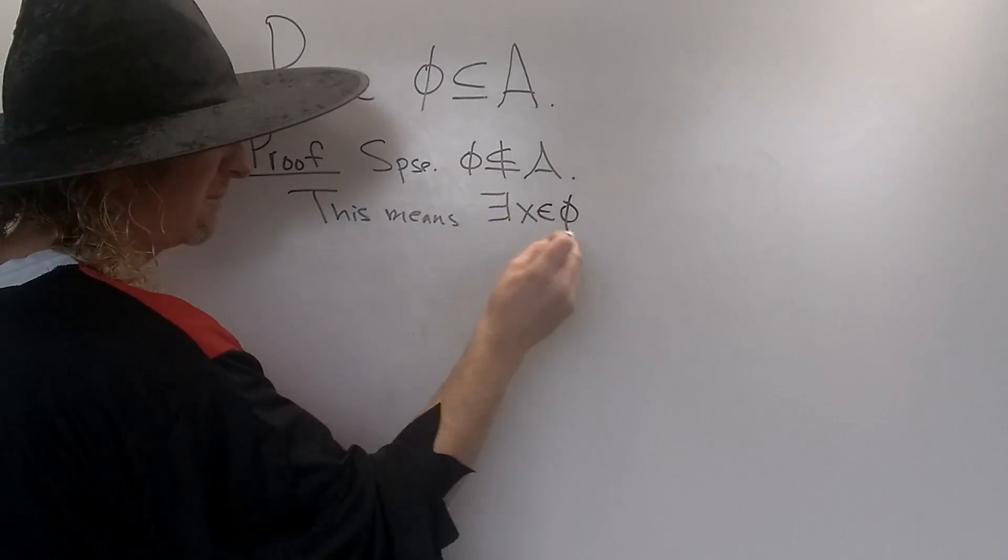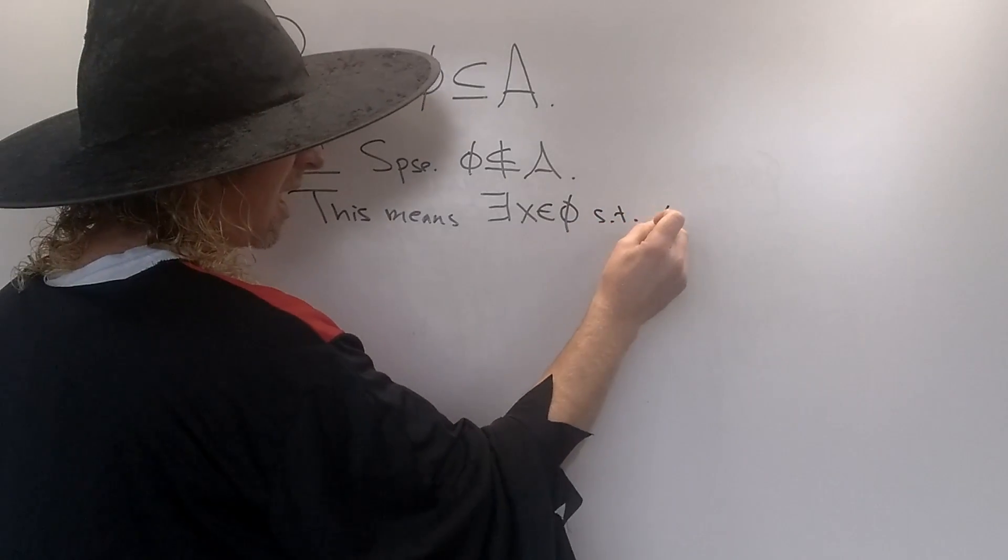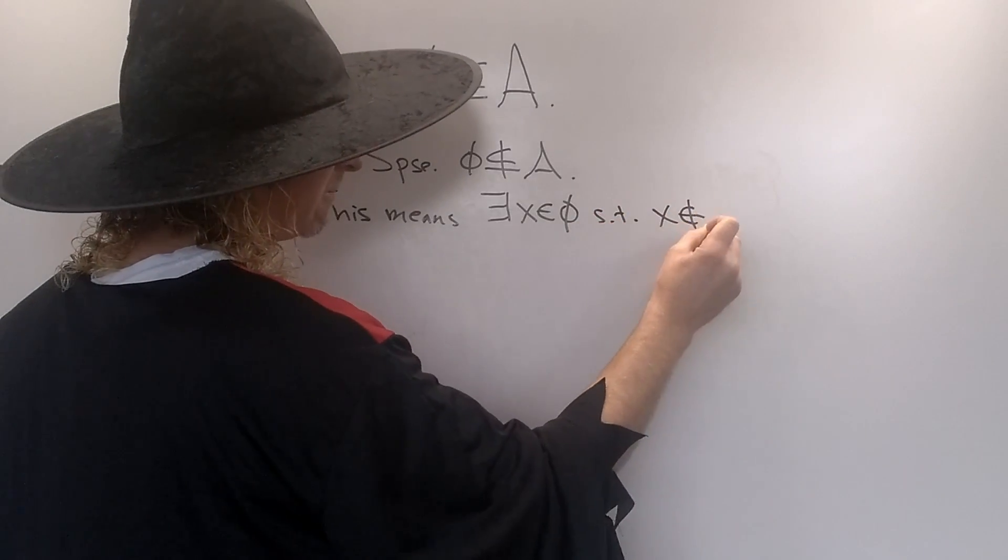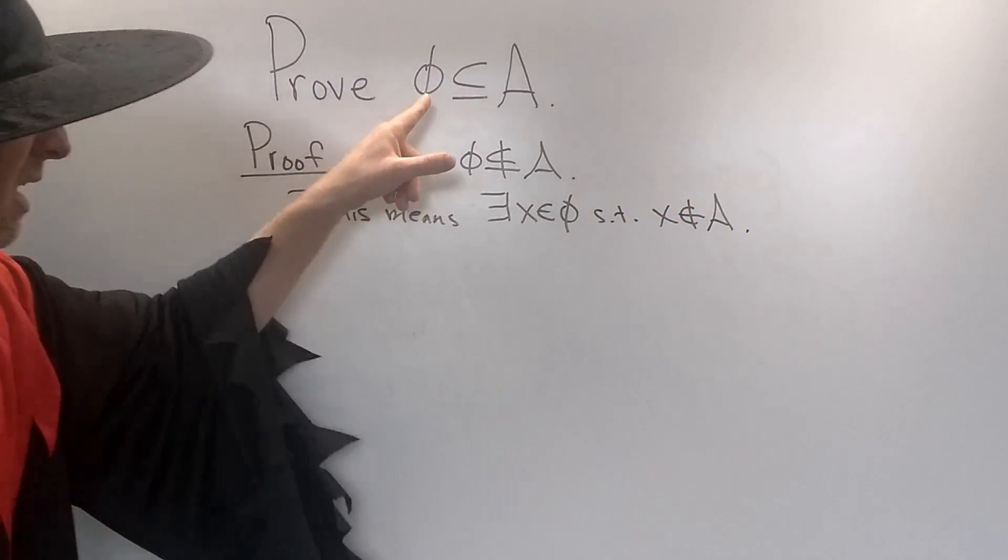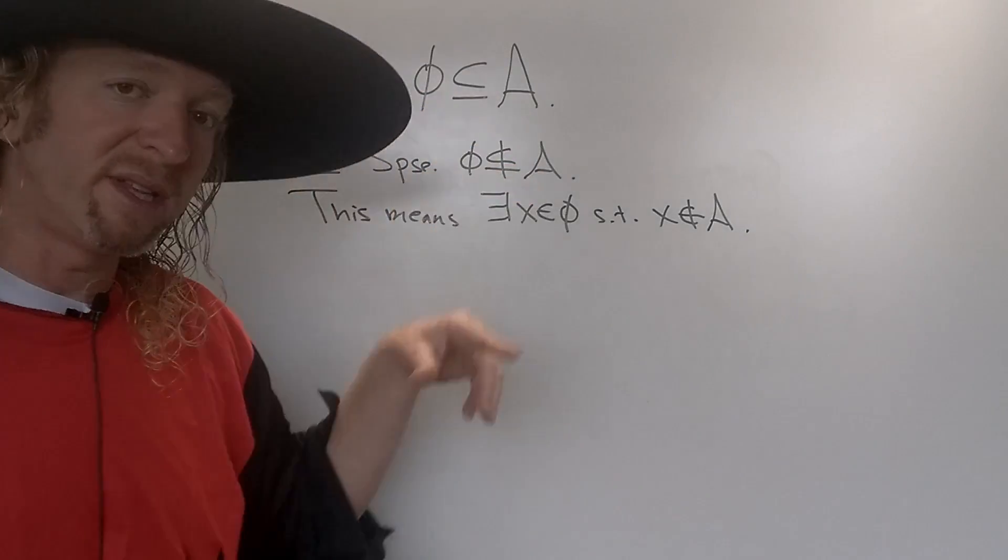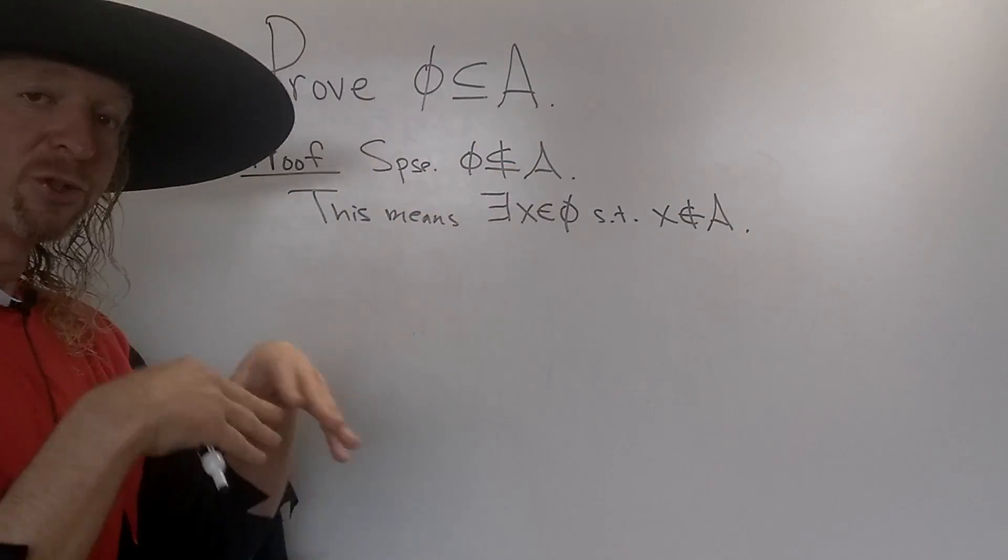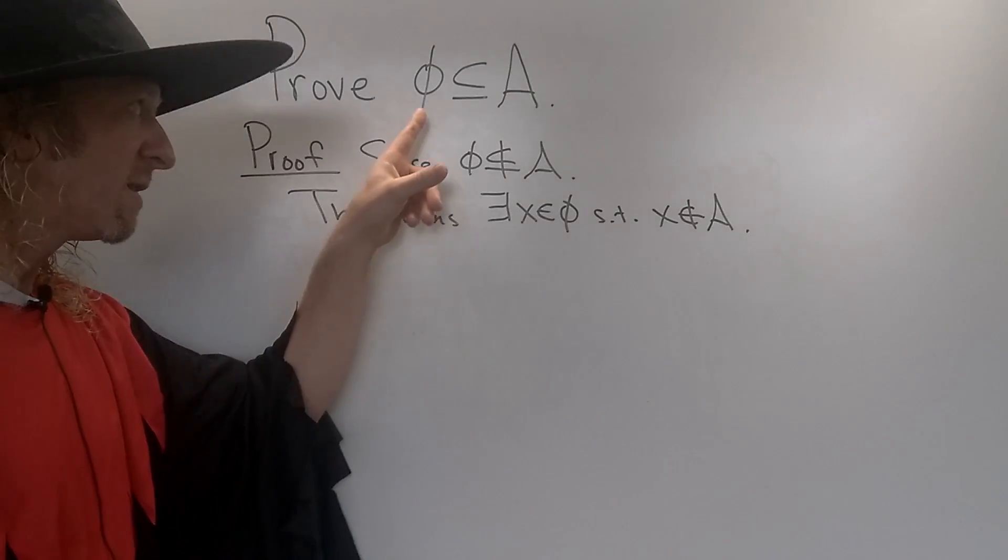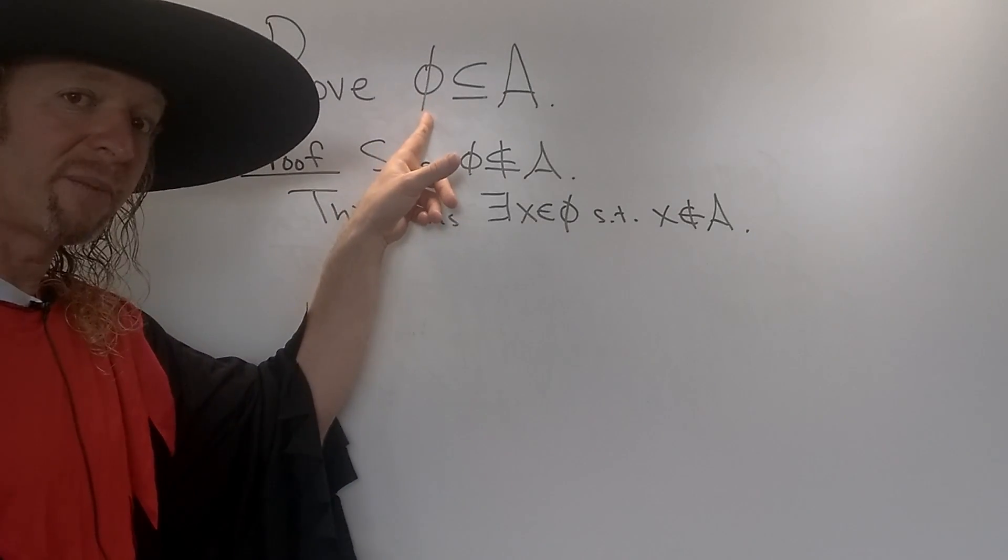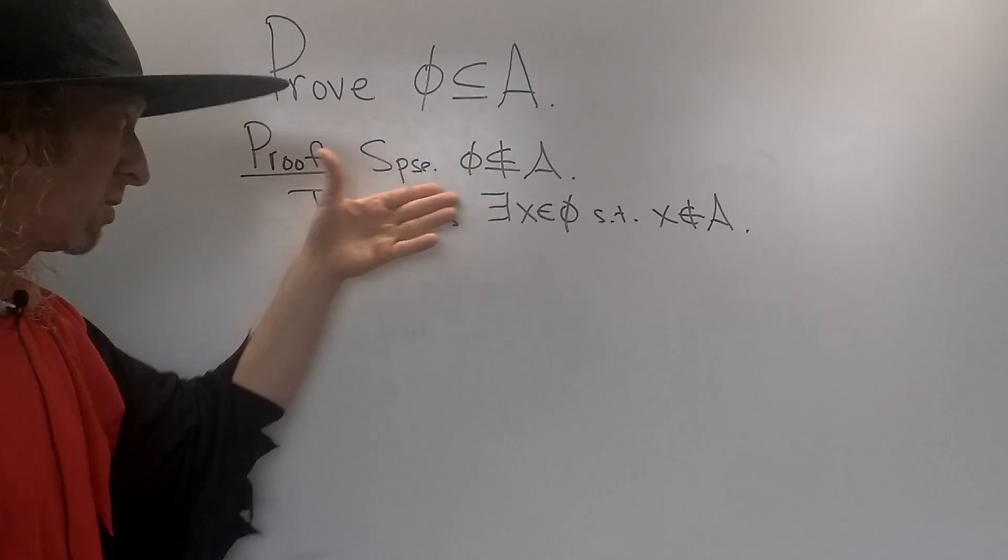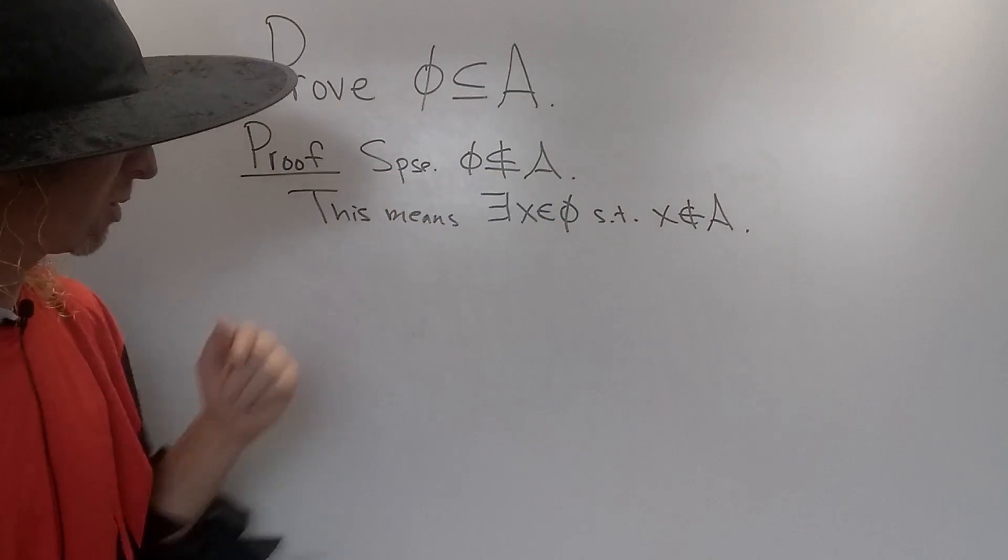So there exists an x in the empty set such that x is not in A. Again, the empty set being a subset of A means all the elements in the empty set are also inside A. So if it's not a subset, there has to be at least one element in the empty set that's not in A. We suppose it wasn't a subset and this is what we write down.